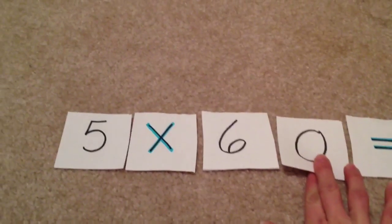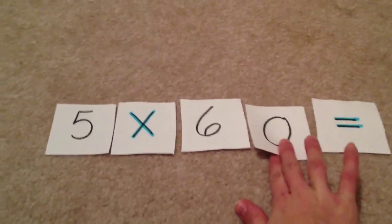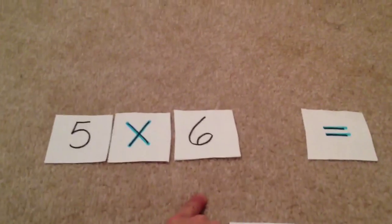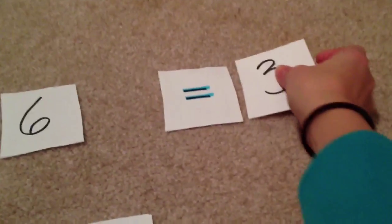How we do this is if we don't know 5 times 60, we can remove the zero for a minute. Now we have 5 times 6, and we know that equals 30.